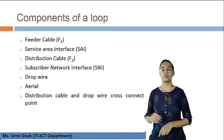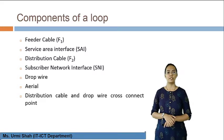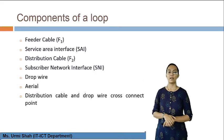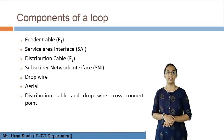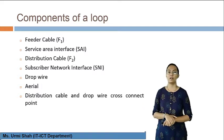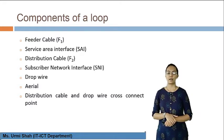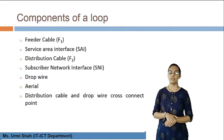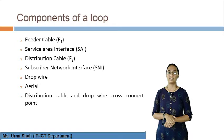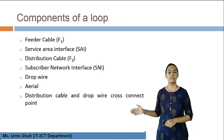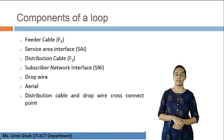Moving to the next topic, the components of a loop — the following are the major block units of a looping system. First is feeder cable, which feeds data from one block to another. Second is service area interface (SAI). Third is distribution cable, which distributes data to various blocks. Fourth is subscriber network interface (SNI). Fifth is drop wire. Sixth is aerial. Seventh is the distribution cable and drop wire cross connect point.